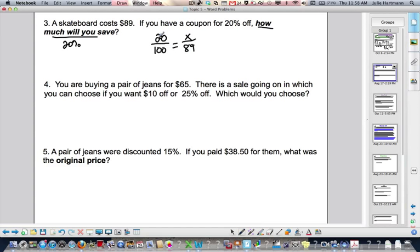Just find your 20% of the $89. So, it looks like this. I can simplify. 20 goes into 100 five times and then cross multiply. 5x equals 1 times 89. Divide by 5. x equals $17.80.